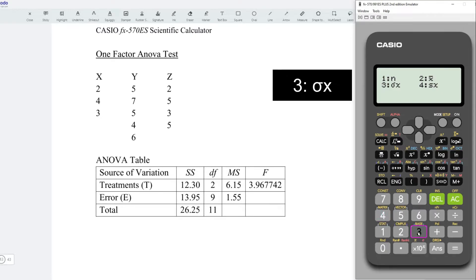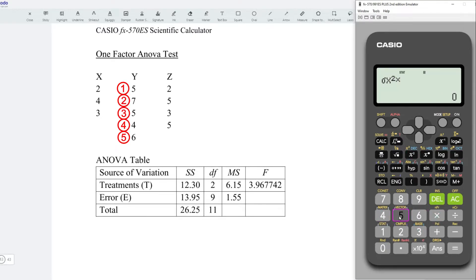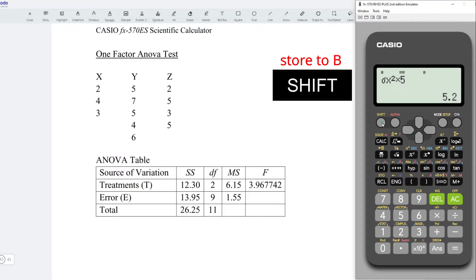Shift 1, variation, 3, square, and we times all together 5 observations. Press on equal. Shift, recall, and store to B.